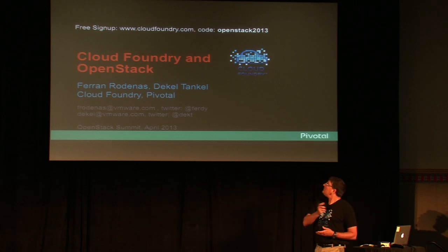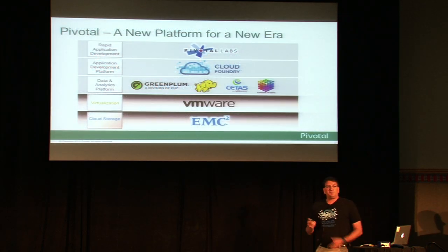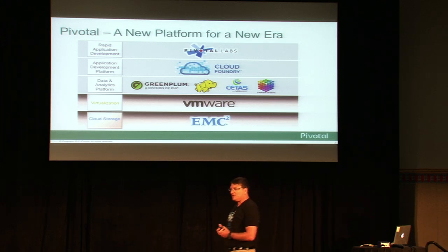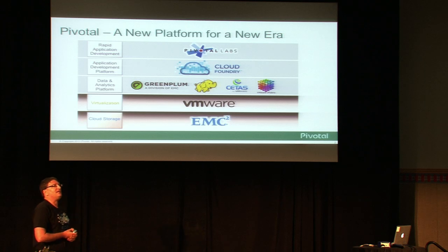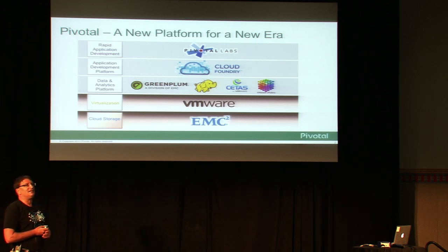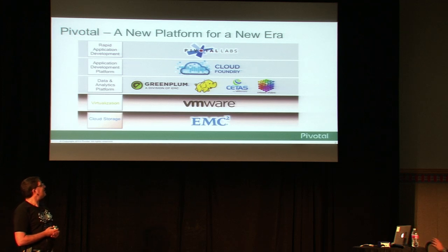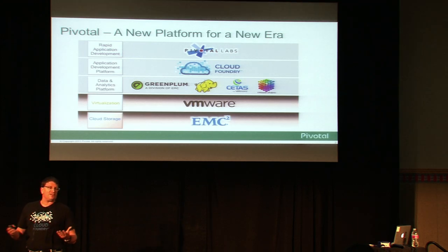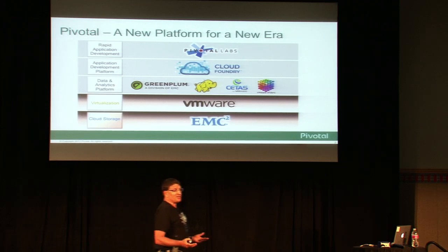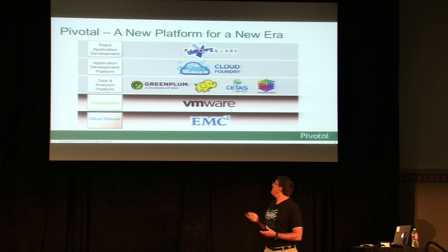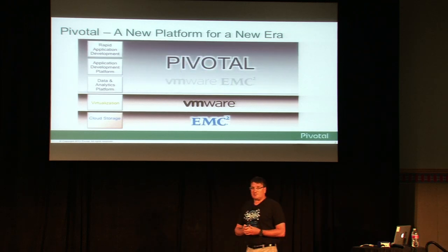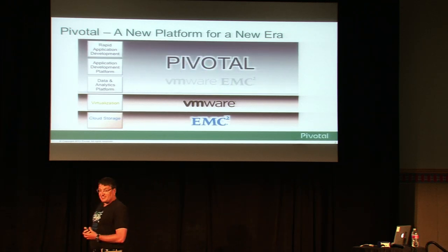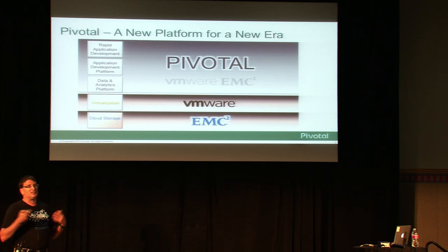Cloud Foundry is now part of Pivotal. Pivotal is a company formed by assets from VMware and EMC, officially launched April 1st as an independent entity. We've been working as a virtual org for a few months now. The idea is to create a platform for next-generation applications covering big data, platform as a service, and the ability to run on any cloud — with different assets from VMware and EMC coming together under Pivotal. We'll explain how that works and specifically talk about OpenStack.